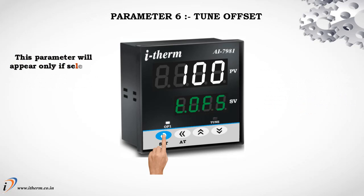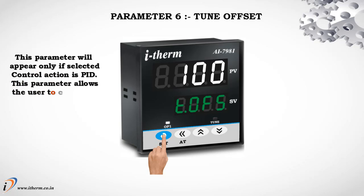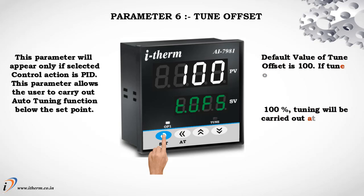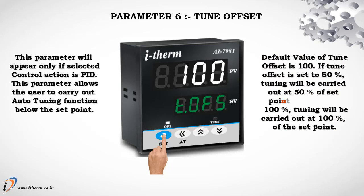Parameter 6: Tune Offset. This parameter will appear only if selected control action is PID. This parameter allows the user to carry out auto-tuning function below the set point. Default value of tune offset is 100. If tune offset is set to 50%, tuning will be carried out at 50% of set point; if set to 100%, tuning will be carried out at 100% of set point.